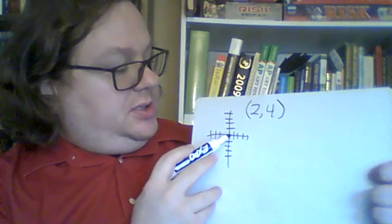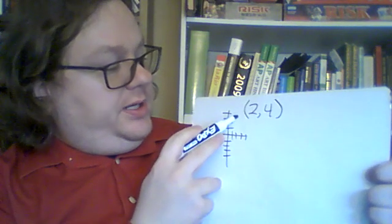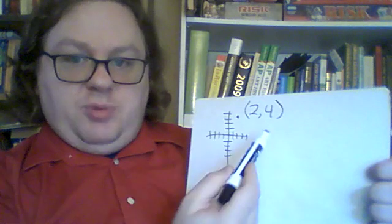So you start at the origin, and you go 1, 2, to the right 2, and then up 4, and you give yourself a point, and that is the point (2,4).